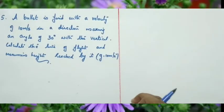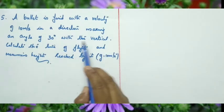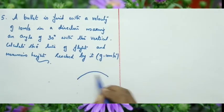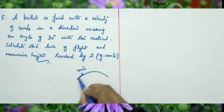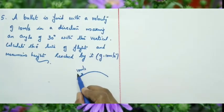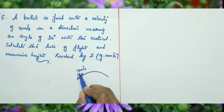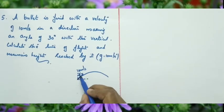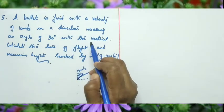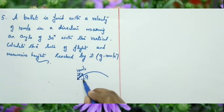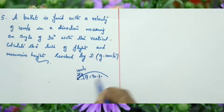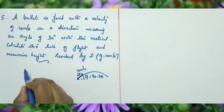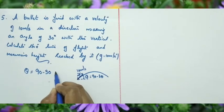Next question: a bullet is fired with a velocity of 10 m/s making an angle of 30° with the vertical. Calculate the time of flight and maximum height. Since the angle is given from the vertical, the angle of projection from the horizontal is θ = 90° − 30° = 60°. So V₀ = 10 m/s, θ = 60°, g = 10 m/s².